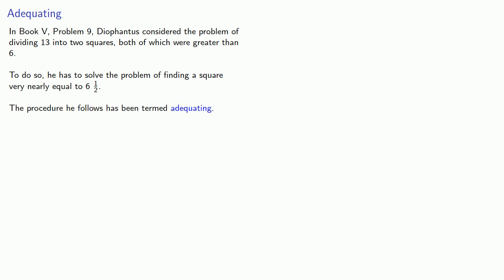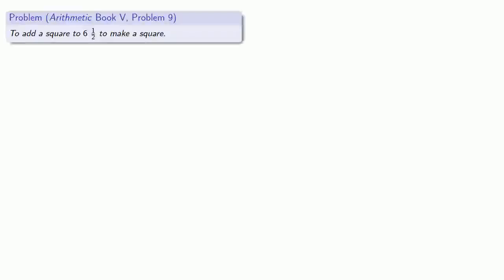A rough translation of this term might be as nearly equal as possible. Now while the problem is to find a square very nearly equal to 6 and a half, we can actually make this problem easier to solve by making it more restrictive. So Diophantus takes a look at the problem to add a square to 6 and a half to make it a square.